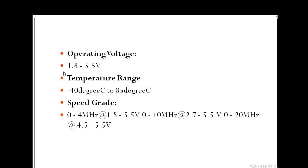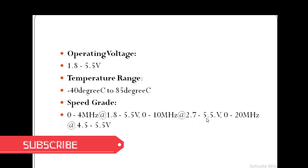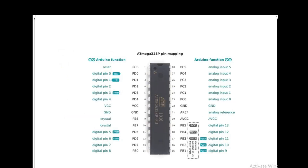The operating voltage of the ATmega328P is 1.8 to 5.5 volts. The temperature range is minus 40 degrees Celsius to 85 degrees Celsius. Regarding speed: at 1.8 to 5.5V the speed is 0 to 4 MHz; at 2.7 to 5.5V the speed is up to 10 MHz; and at 4.5 to 5.5V the speed is 0 to 20 MHz.